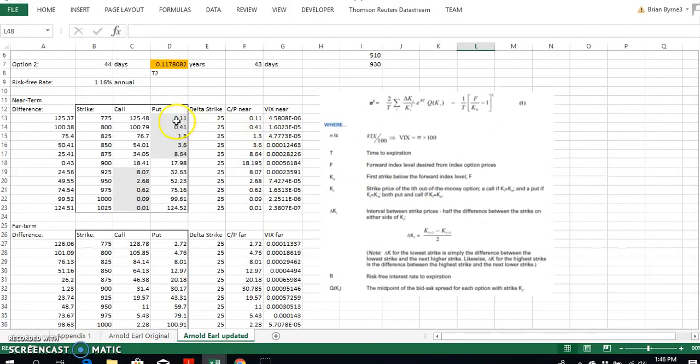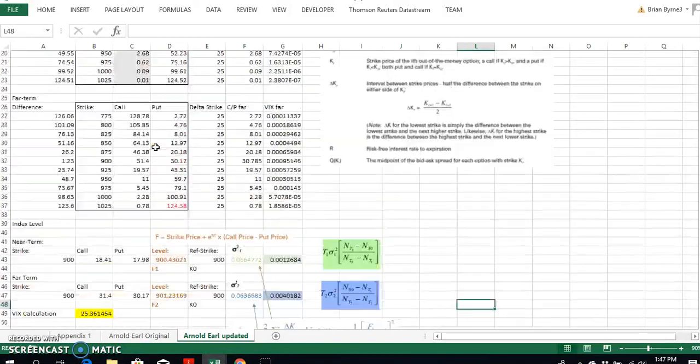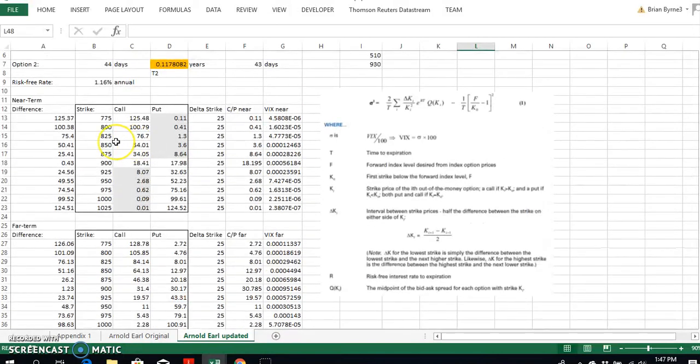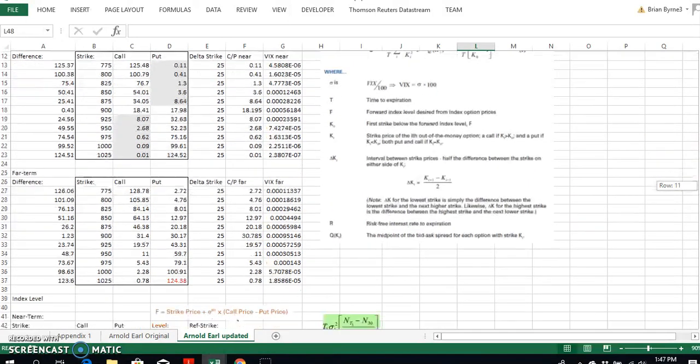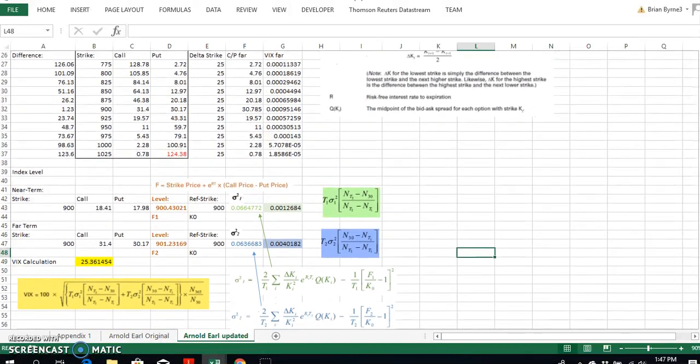The VIX more conventionally today uses out-of-the-money puts, out-of-the-money calls, again out-of-the-money puts and out-of-the-money calls for two sets of option chain data, both that straddle the 30-day window. And then we use an interpolation type technique to produce the VIX overall estimate.